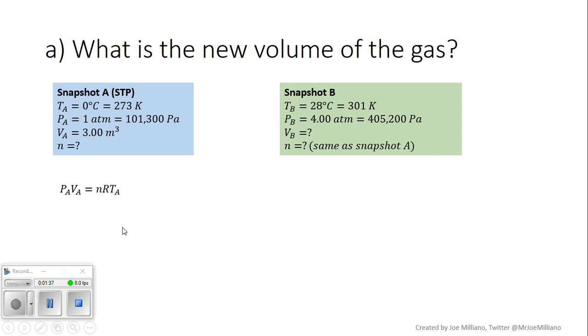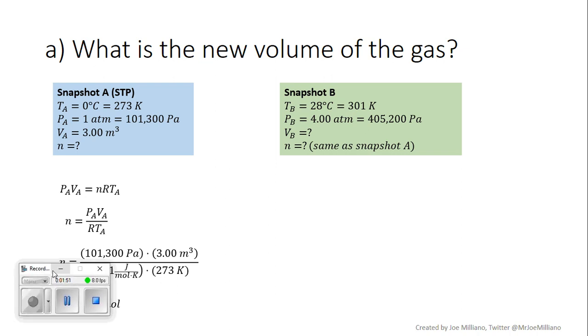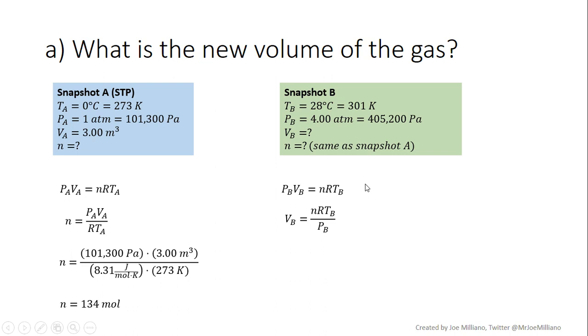Then we'll plug it in snapshot B to figure out the rest. We're going to use PV equals NRT. We isolate our unknown variable as always and then plug in numbers and solve for the number of moles. So we have 134 moles. Now we can plug this in on the other side also using PV equals NRT. Our volume now is the one we're isolating for. We isolate our unknown variable, plug in numbers, and we get a new volume of 0.827 meters cubed. We know that we've changed dramatically in our volume. We started with 3 meters cubed, now we're going down to 0.827 meters cubed.